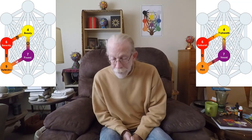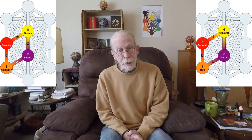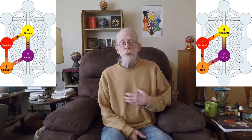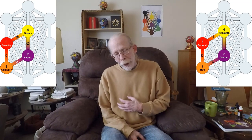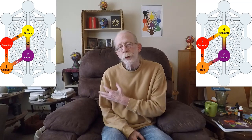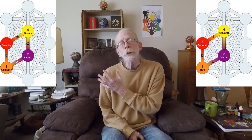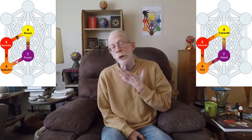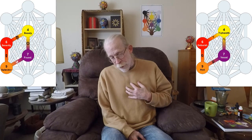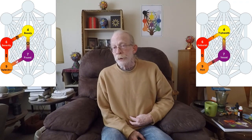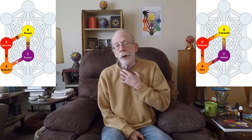The next gate is a quadrangle. It goes from Yesod, down the path of Capricorn into Hod, up the path of Mercury to Geburah, up the path of Virgo to Tiferet, and then down the path of the Sun to Yesod, and then back around.